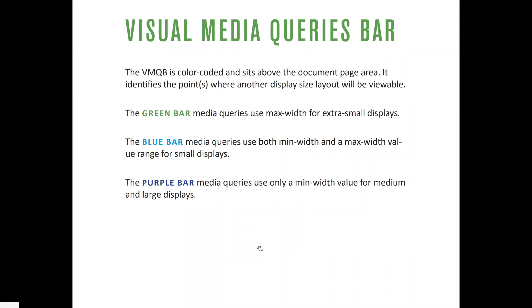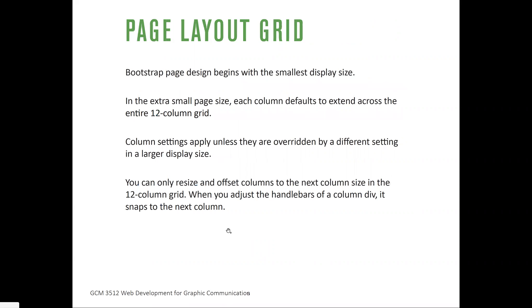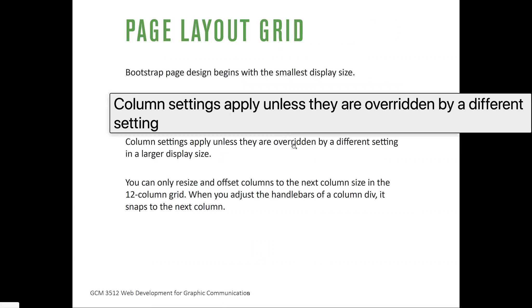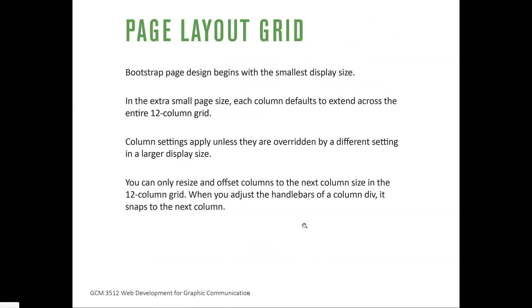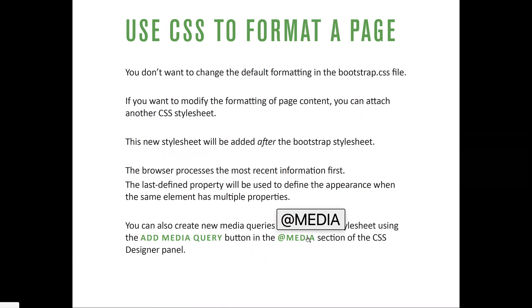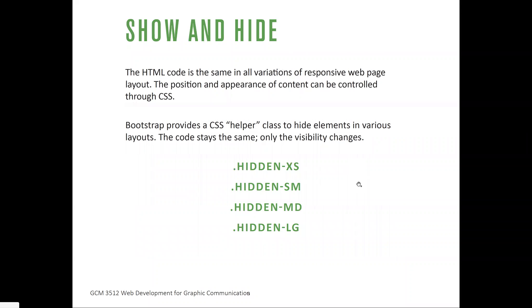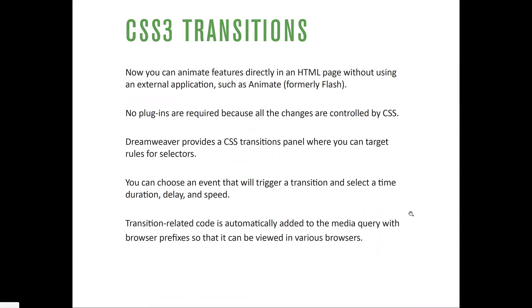In Dreamweaver, you'll see a visual media query bar with color codes: the green bar shows the maximum width for extra small displays, the blue bar shows the min/max width range for small displays, and the purple bar shows max width for medium and large displays. With Bootstrap, you use a 12-column grid and resize columns based on that grid. You can also use helper classes to hide certain elements when the screen size changes.